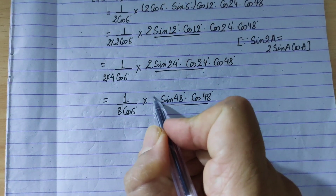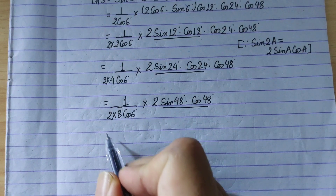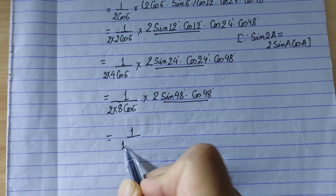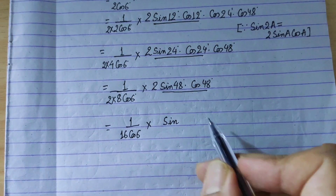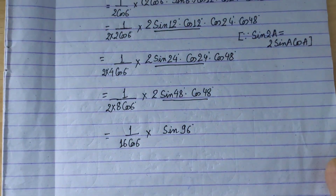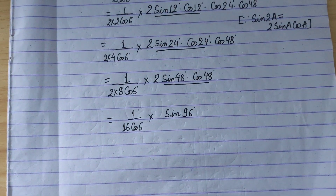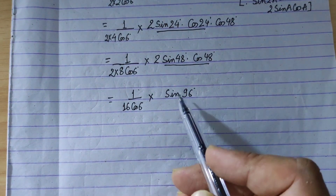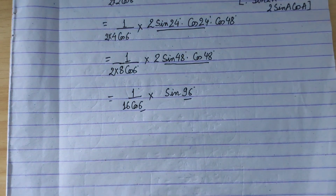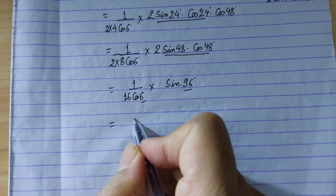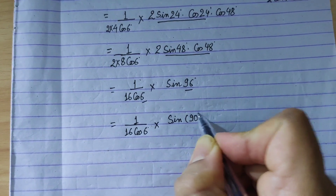So finally we have 1 upon 16 times cos 6° times sin 96°. Now 96 equals 90 plus 6.